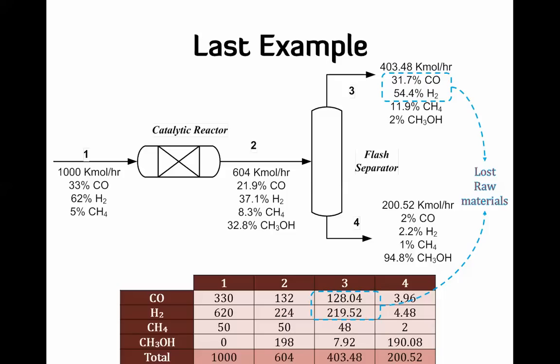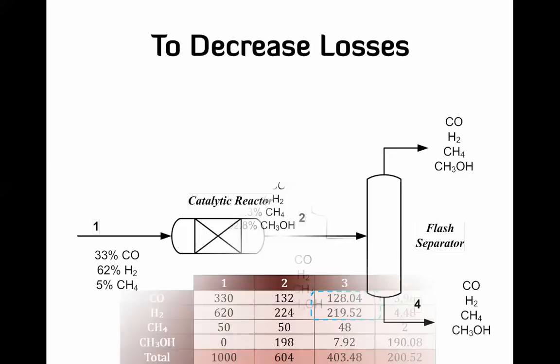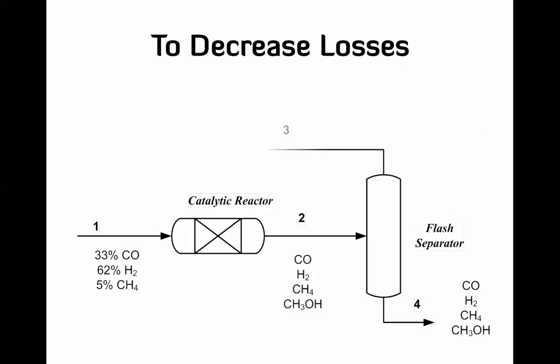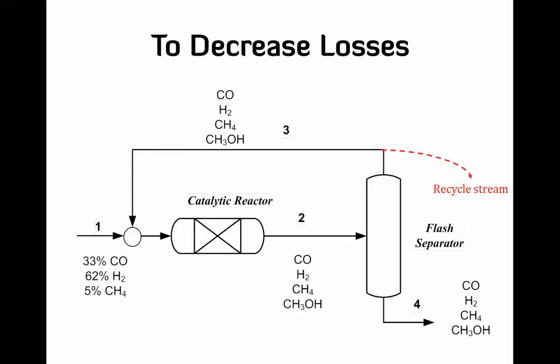Because of this problem, the flowsheet has to take another shape, which uses what's called a recycle stream. Instead of throwing away the unreacted reactants, we recycle them and use this recycle stream to mix them with the fresh feed in order to make use of these unused raw materials. Another unit is added to the flowsheet — a mixer — that mixes the fresh feed with the recycle stream, so the feed to the reactor is a mixture of both.